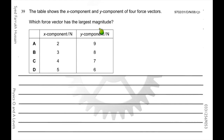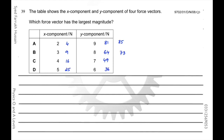You are given four options with x and y components; find which has the largest magnitude. The largest magnitude corresponds to the greatest value of x² + y². Option A: 4 + 81 = 85. Option B: 9 + 64 = 73. Option C: 16 + 49 = 65. Option D: gives 61. Since 85 is the largest, option A has the greatest resultant magnitude.